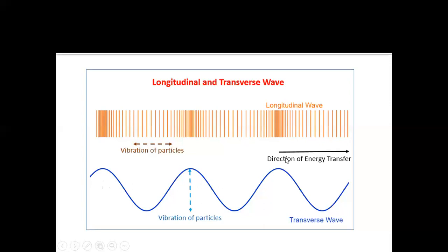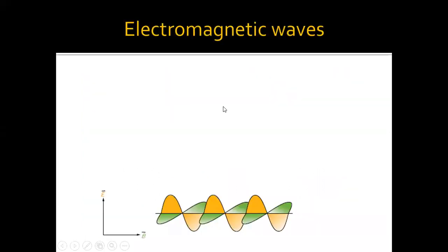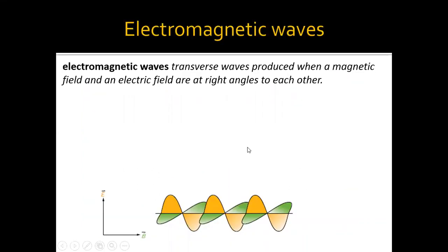Regarding the direction of energy: if it's a mechanical wave, it is going to carry only energy. If it's an electromagnetic wave, it is going to carry energy and momentum together. The second type we have is electromagnetic waves, which are a kind of transverse wave.